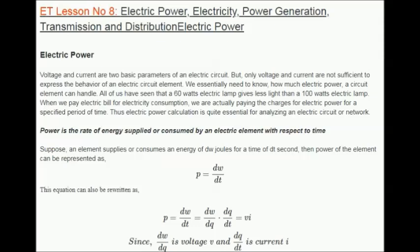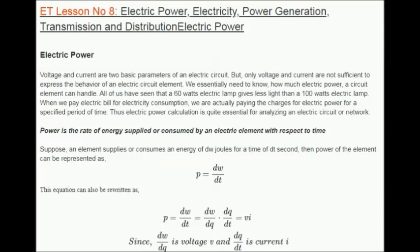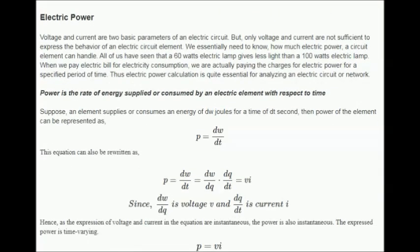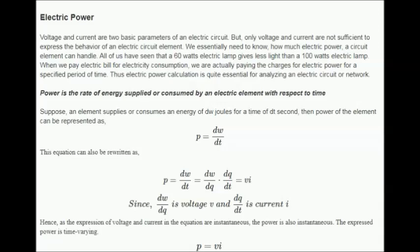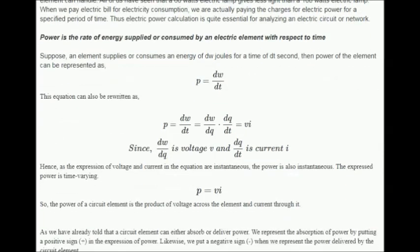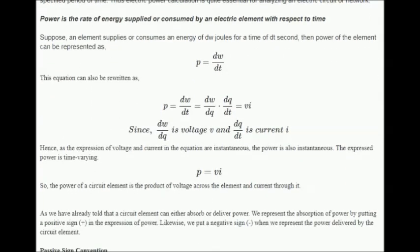Power is the rate of energy supplied or consumed by an electric element with respect to time. Suppose an element supplies or consumes an energy of dw joules for a time of dt seconds, then the power of the element can be represented as given here. This equation can also be rewritten as follows. As the expressions of voltage and current in the equation are instantaneous, the power is also instantaneous. The expressed power is time varying, so the power of a circuit element is the product of voltage across the element and current through it.